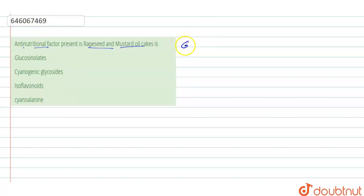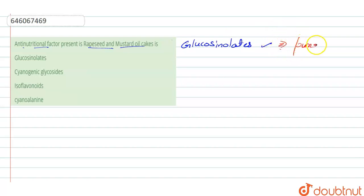Mustard oil cakes contain glucosinolates. These glucosinolates are the natural components of many pungent plants such as mustard, rapeseed, and cabbage. The pungency in these plants occurs due to glucosinolates.